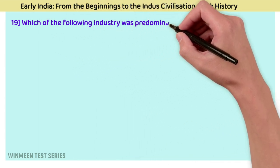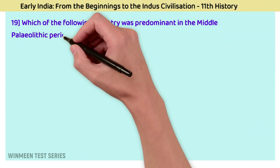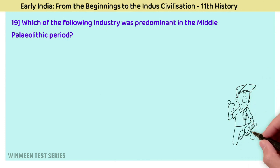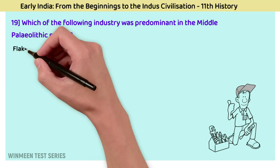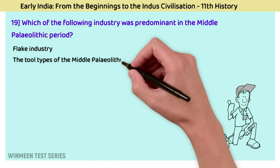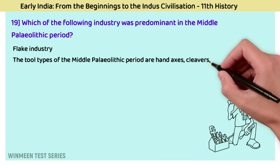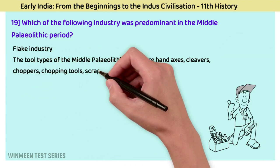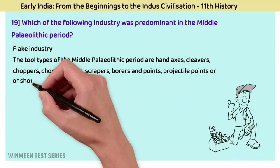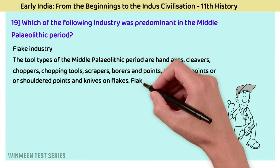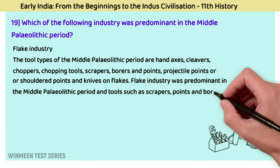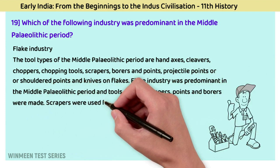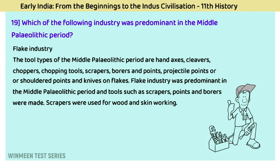Question 19: Which industry was predominant in the Middle Paleolithic period? The answer is the flake industry. Tool types of the Middle Paleolithic period include hand axes, cleavers, choppers, chopping tools, scrapers, borers, projectile points, and knives on flakes. The flake industry was predominant in this period; tools such as scrapers, points, and borers were made, and scrapers were used for wood and skin working.